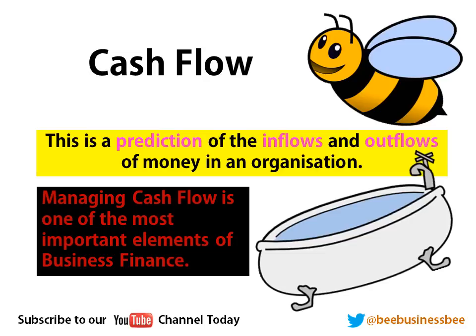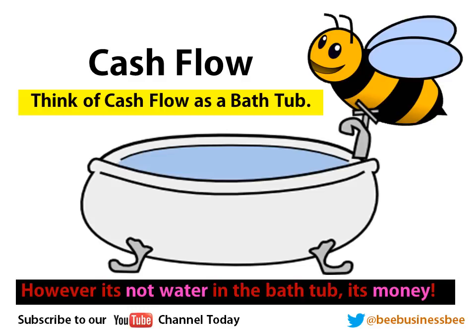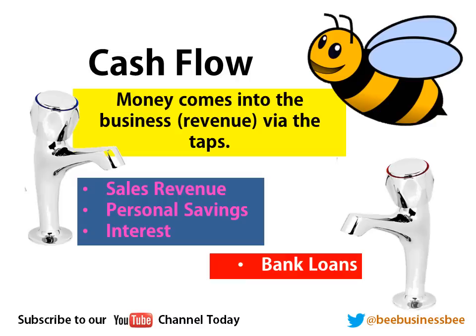The best way to think about cash flow is in a bathtub. You've got a tap that brings in money and you've got a plug hole that drains out your money. That level of money in your business is the water in your bathtub. Think of the cash flow as a bathtub — it's not water in the bath, it's money that runs into your bath.